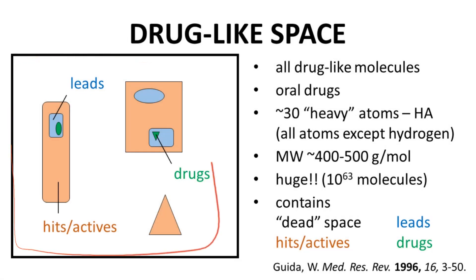Here is a box. This box contains all molecules that we might consider as potential drugs. The molecules in this box include both drugs and molecules that resemble drugs — drug-like molecules. To put some limits on this box, this drug-like space, we are focused on oral drugs. In general, oral drugs tend to have around 30 heavy atoms — these are atoms excluding hydrogens. The molecular weight of these compounds often falls in the 400 to 500 gram per mole range. Nobody knows how many molecules are in this space, but it is huge. One estimate from the reference on this slide says there could be 10 to the 63 molecules.